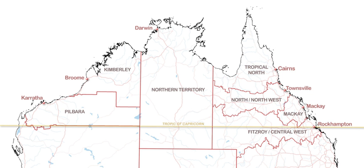Tropical cyclones may cross the coast anywhere in northern Australia but are most frequent between Derby and Onslow on the west side and between Cooktown and Rockhampton on the east. Inland, variability of rainfall is related to the penetration of the summer monsoon, with high rainfall in seasons like 1973–1974, 1975–1976 and from 1998 to 2001 when the monsoon is most powerful.